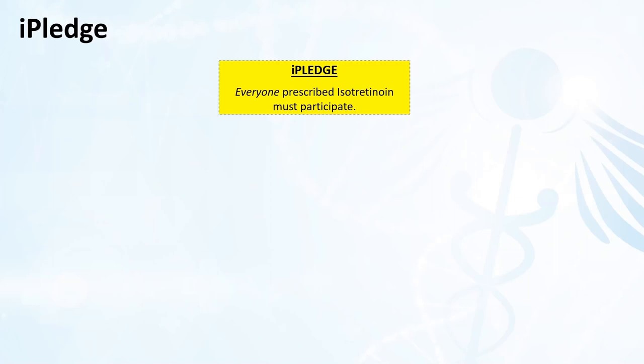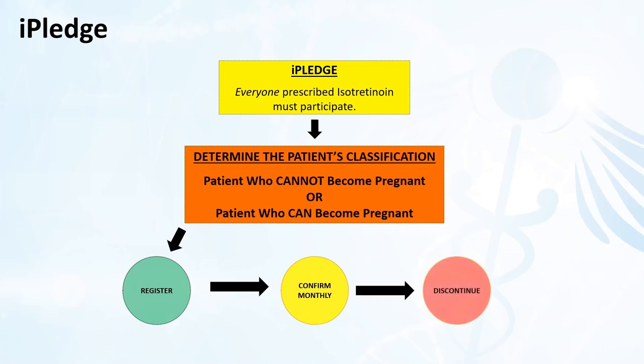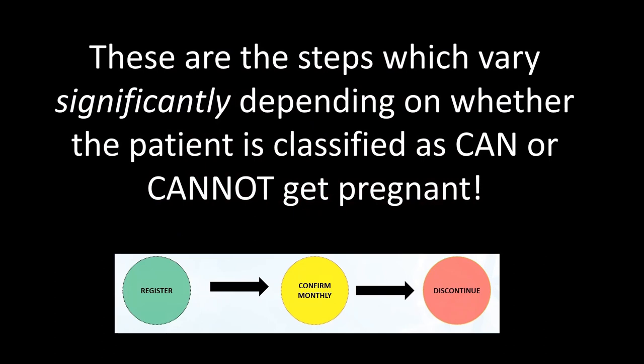Here's an overview of the process. All patients prescribed isotretinoin must participate in iPledge, and we must determine the patient's classification — can they become pregnant, or can they not? Once the patient's classification is determined, it's simply a matter of understanding the steps to register the patient, confirm them at each monthly visit, and finish their treatment and discontinue them from iPledge. These processes of registering, confirming, and discontinuing patients vary significantly for each of the two groups.